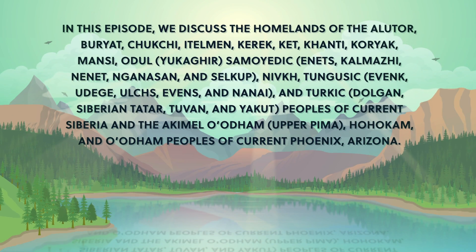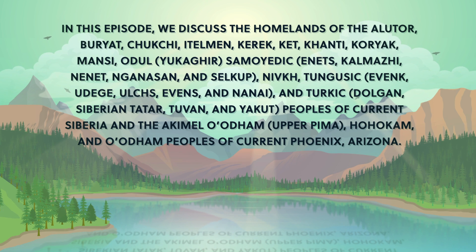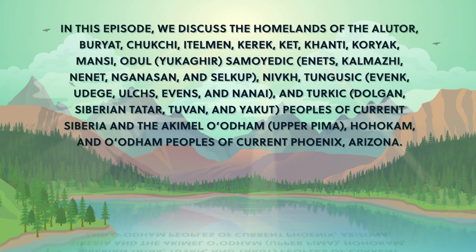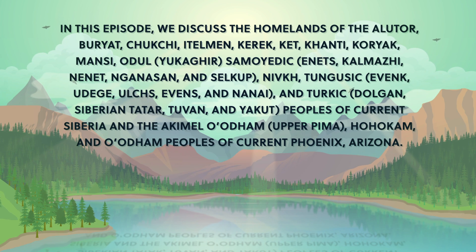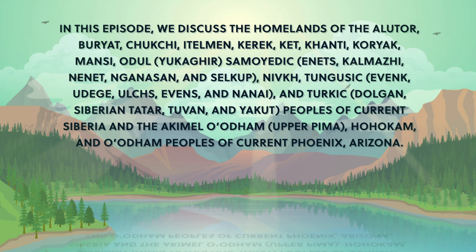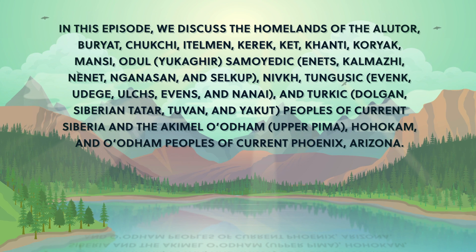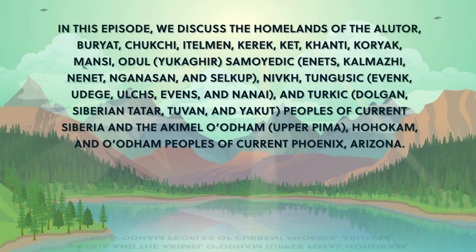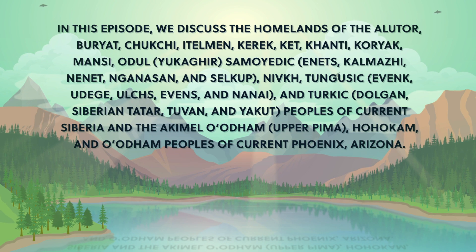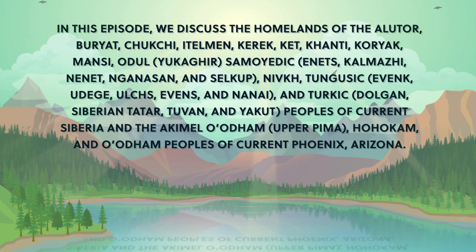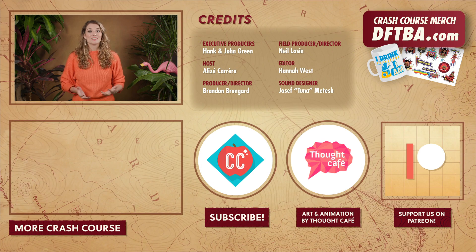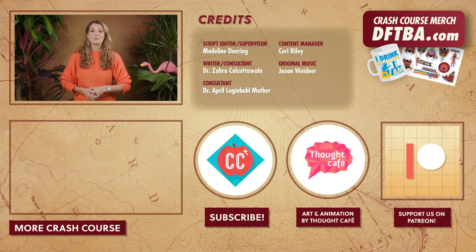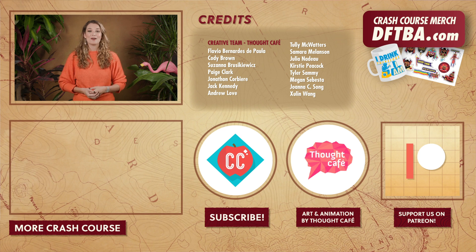Many maps and borders represent modern geopolitical divisions that have often been decided without the consultation, permission, or recognition of the land's original inhabitants. Many geographical place names also don't reflect the indigenous or aboriginal peoples' languages, so we at Crash Course want to acknowledge these peoples' traditional and ongoing relationship with that land and all the physical and human geographical elements of it. We encourage you to learn about the history of the place you call home through resources like nativeland.ca and by engaging with your local indigenous and aboriginal nations through the websites and resources they provide. Thanks for watching this episode of Crash Course Geography. If you want to help keep Crash Course free for everyone forever, you can join our community on Patreon.